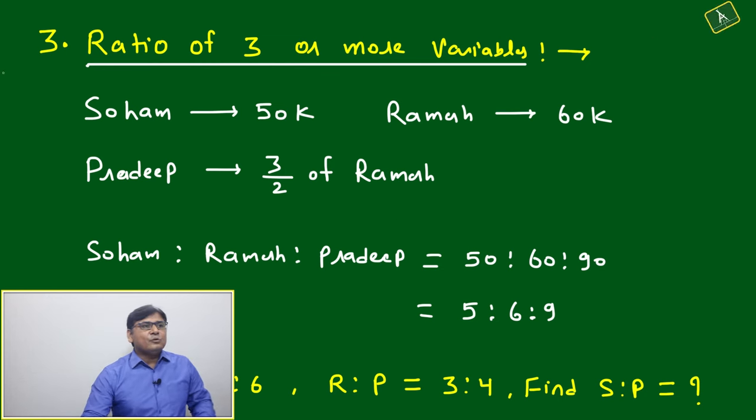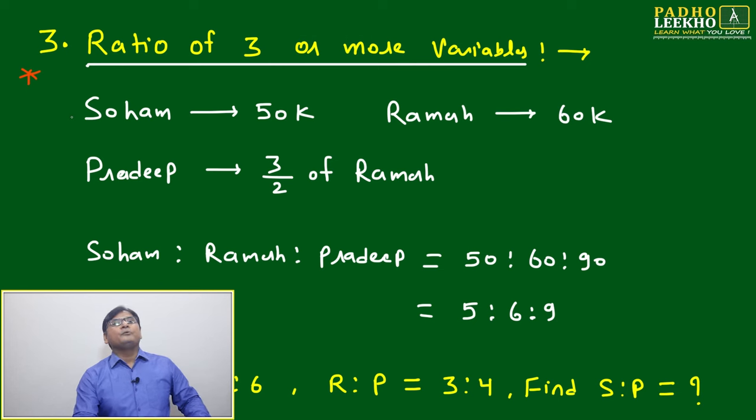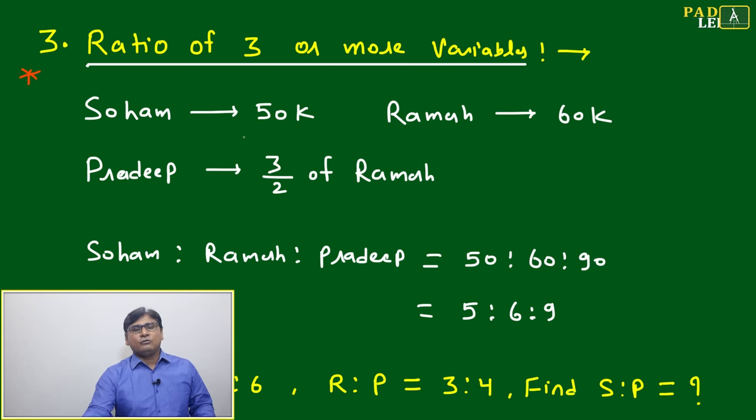Now we'll come to the next property that is more interesting and useful for your CAT point of view: ratio of three or more variables. Till now we have seen only two variables, but now one more friend has come.